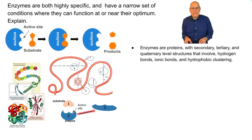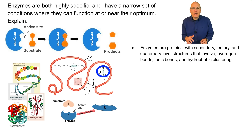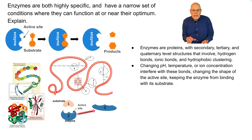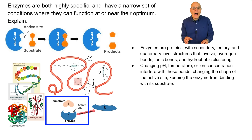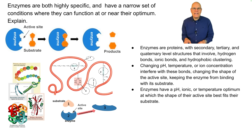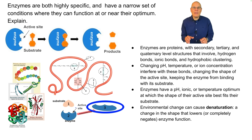Enzymes are proteins with secondary, tertiary, and quaternary level structures that involve hydrogen bonds, ionic bonds, and hydrophobic clustering. Changing pH, temperature, or ion concentration interferes with these bonds, changing the shape of the active site, keeping the enzyme from binding with its substrate. Enzymes therefore have a pH, ionic, or temperature optimum at which the shape of their active site best fits their substrate. Environmental change can cause denaturation — a change in the shape of the enzyme that lowers or completely negates enzyme function.